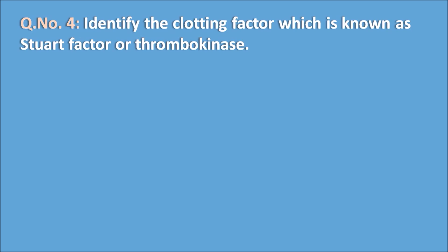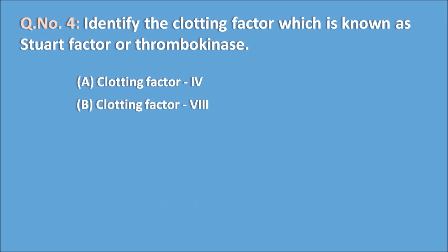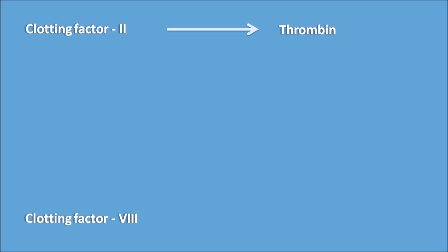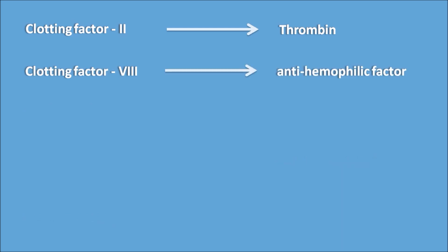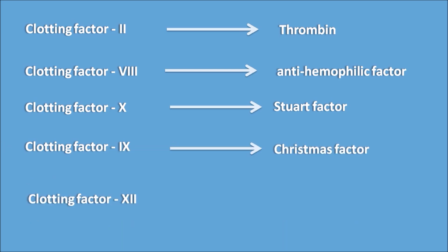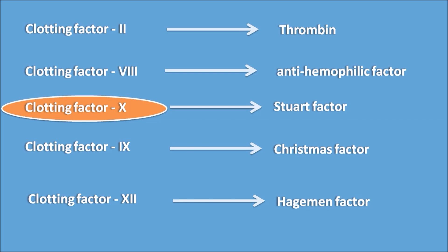Question four: identify the clotting factor known as Stuart factor or thrombokinase. Options are A. clotting factor 4, B. clotting factor 8, C. clotting factor 10, and D. clotting factor 12. The answer is clotting factor 10. For reference: factor 2 is thrombin, factor 8 is anti-haemophilic factor, factor 10 is Stuart factor, factor 9 is Christmas factor, and factor 12 is Hageman factor.